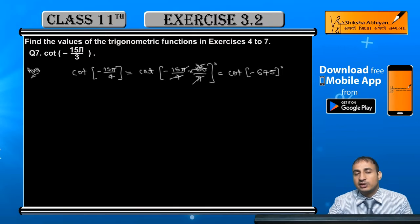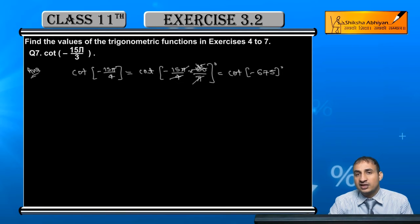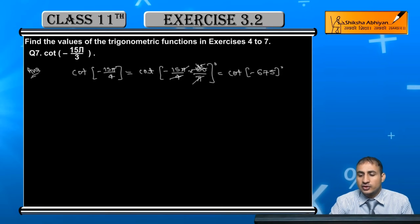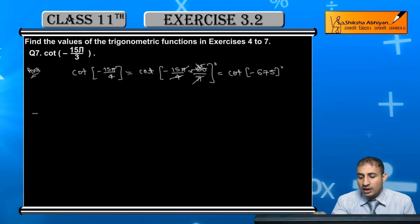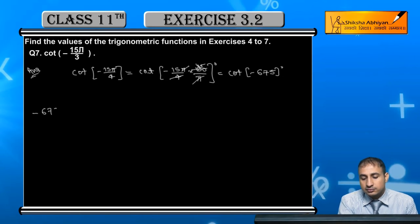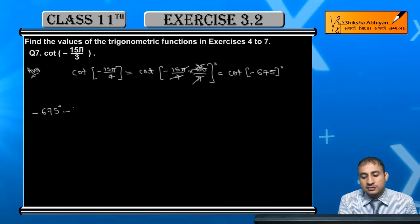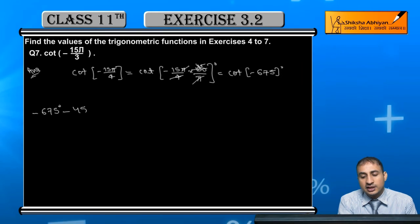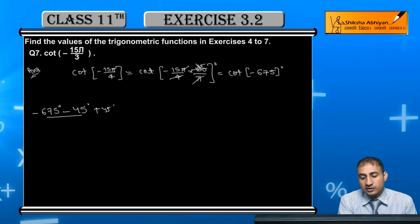What is the multiple of 360? The multiple of 360 is 720. So this is minus 720 plus 45 degrees.